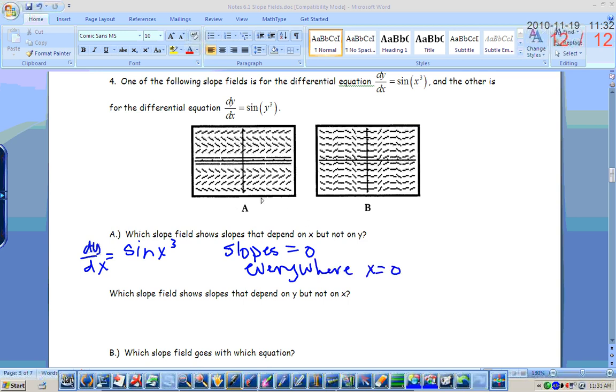So x equals zero, is that going to be along a vertical line or along a horizontal line? It's going to be along a vertical line. Okay, so everywhere that the slopes equal zero, where x is zero, would be graph B.